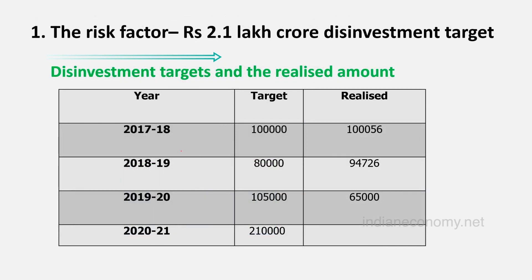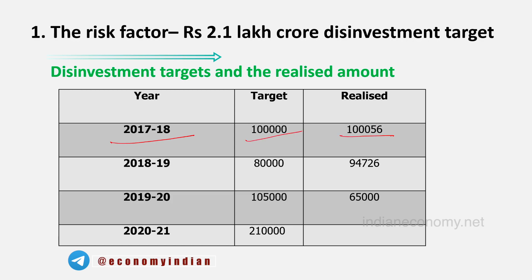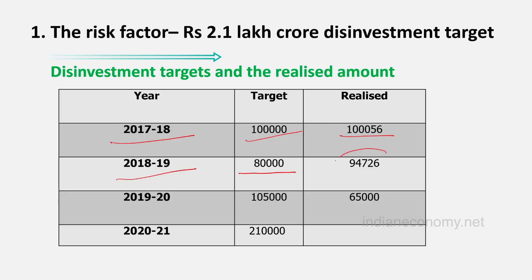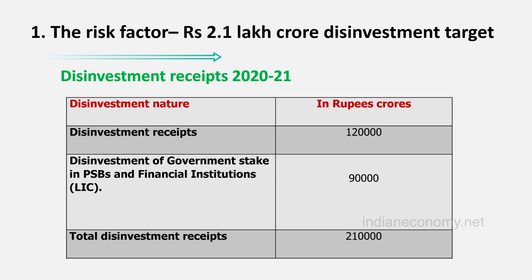In this diagram we are comparing the targets for different years with the actual released amounts. For 2017-18, the target was ₹1 lakh crore and the government released more than that. For 2018-19, the target was ₹80,000 crore and the government released around ₹94,000 crore as per the revised estimate. For 2019-20, the target was ₹1,05,000 crore but the government released only ₹65,000 crore. For 2020-21, the government's target is ₹2,10,000 crore.